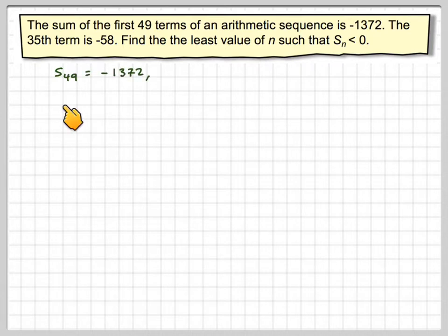So we've got that the sum of the first 49 terms is minus 1372. The 35th term is minus 58. What we don't know is the first term, or the common difference, and when we've got that, we can find the value of n such that the sum is just less than 0.